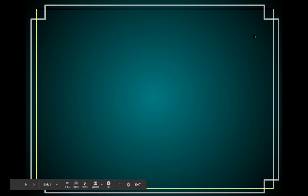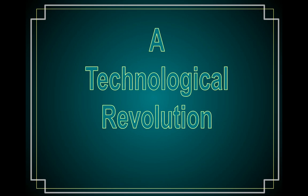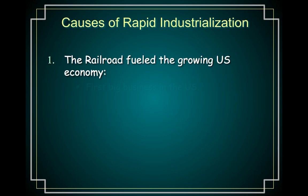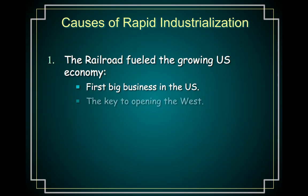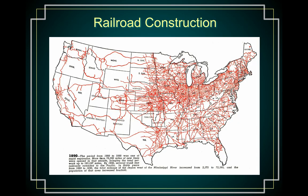Hi everybody, Mrs. Coates here. Today we're going to start the Industrial Revolution. Before we get into all the interesting people and politics, let's take a review of the time when we looked at the market revolution and technological revolution. There were several causes of rapid industrialization in the United States at this time.